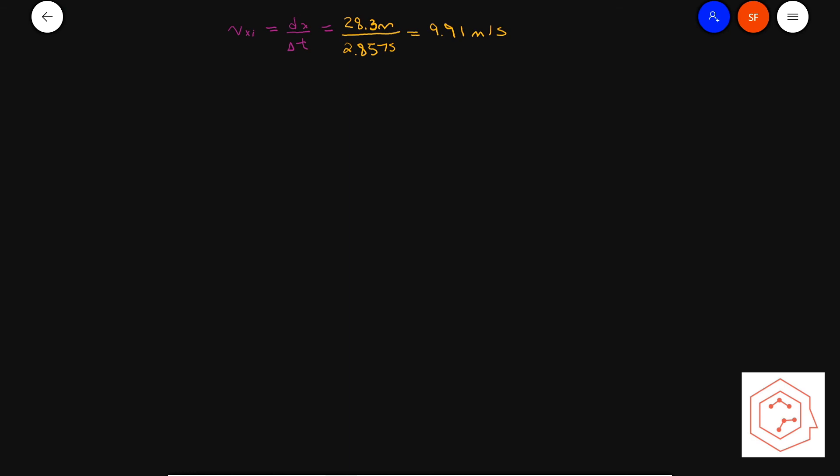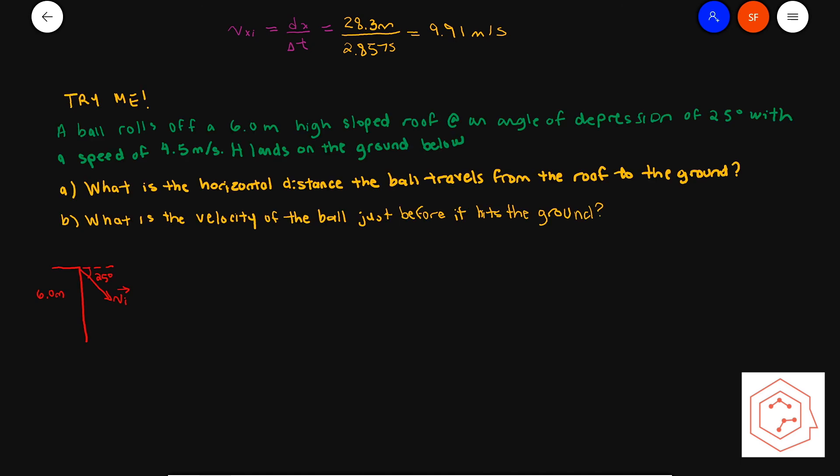I'm going to wrap this session off with a test question. A ball rolls off a six-meter high sloped roof at an angle of depression of 25 degrees with a speed of 4.5 meters per second and lands on the ground below. Part a asks for the horizontal distance the ball travels from the roof to the ground, and part b asks for the velocity of the ball just before it hits the ground. I'll leave it up to you to solve and just give the final answers.